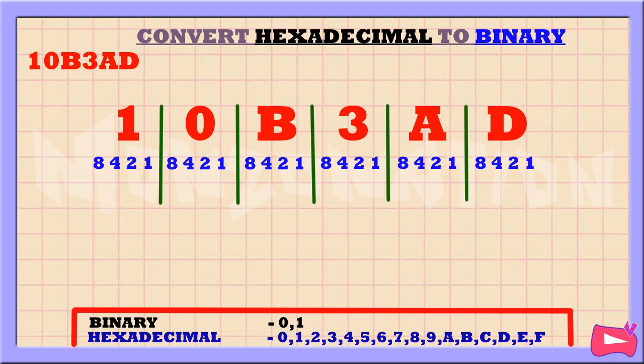D is the sum of 8 plus 4 plus 1, so we're going to replace 8, 4, and 1 with 1. We didn't use the 2, so let's replace it with a 0.